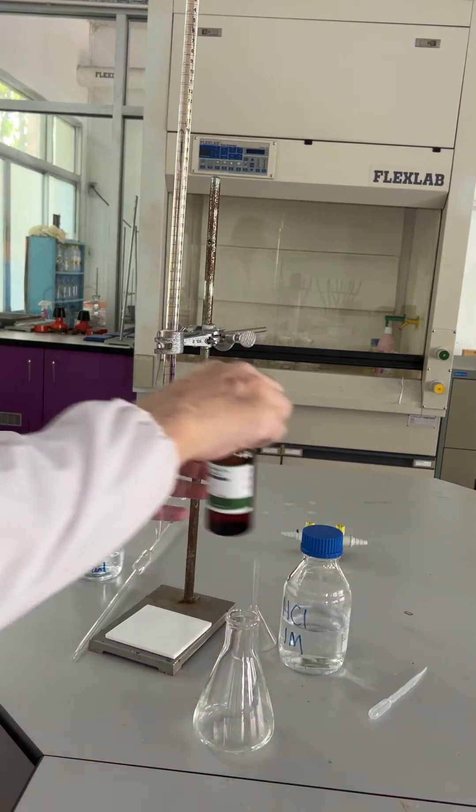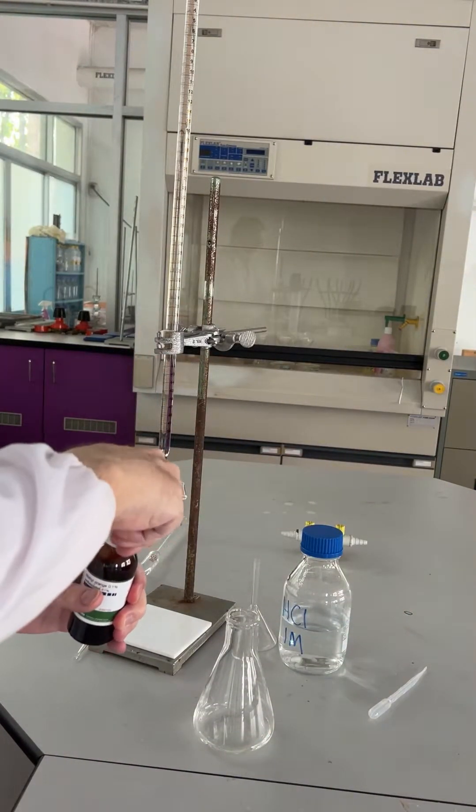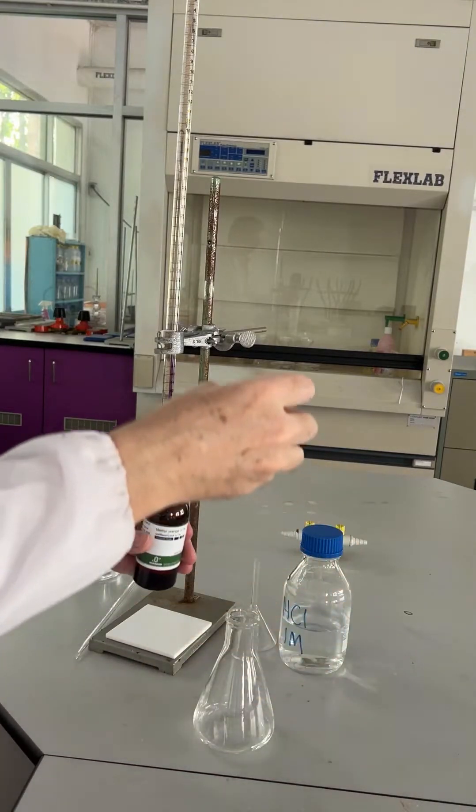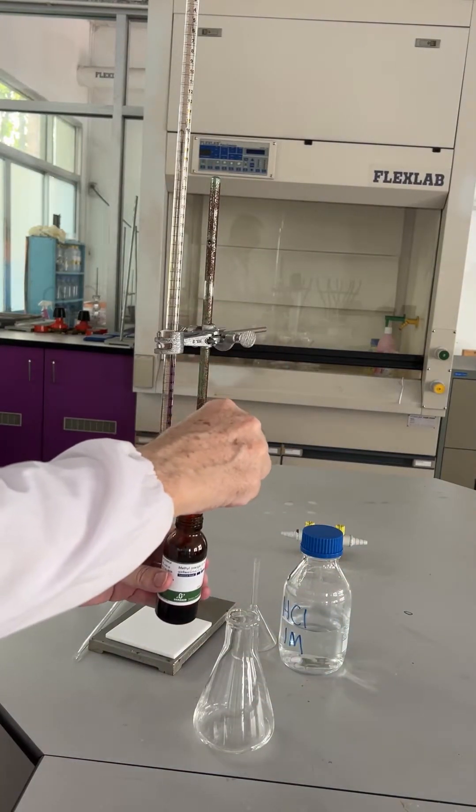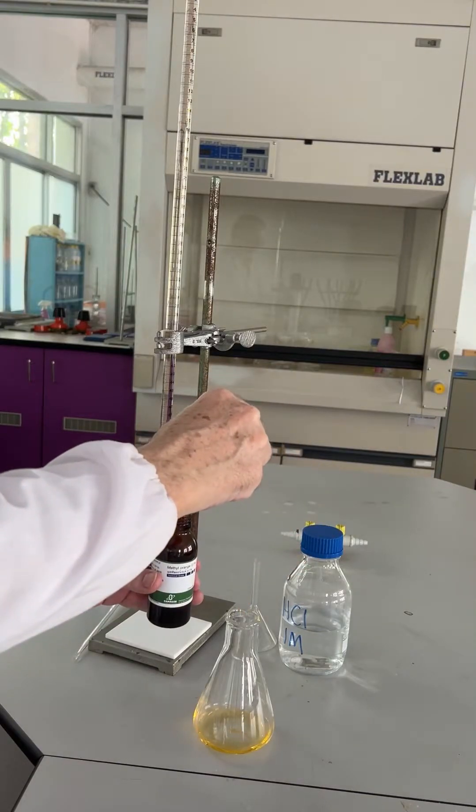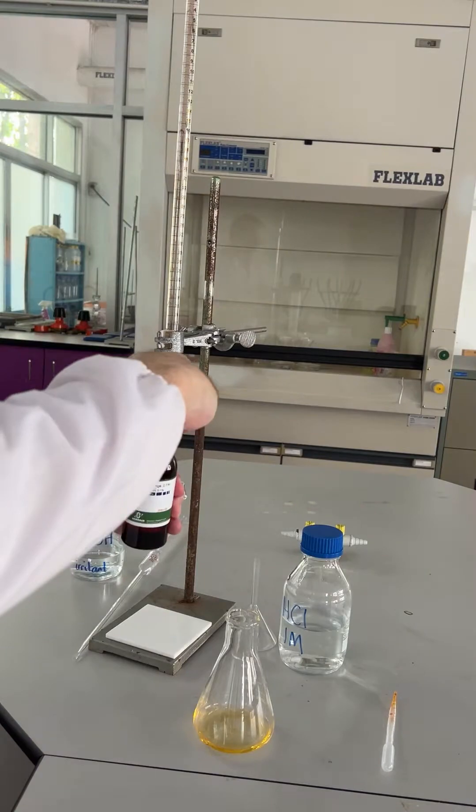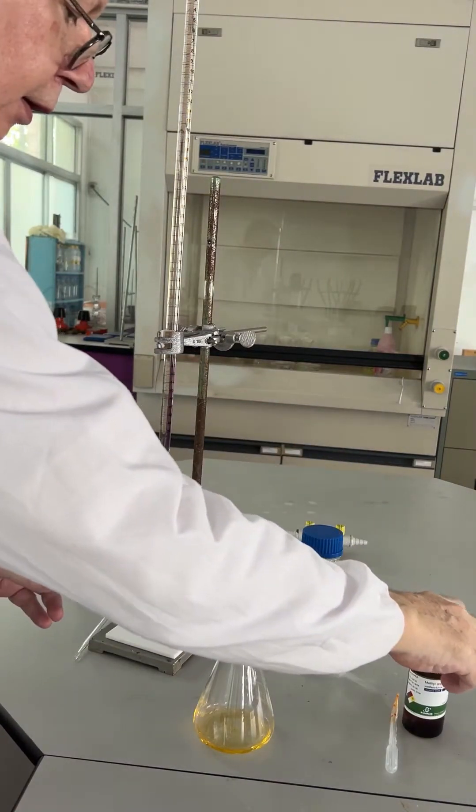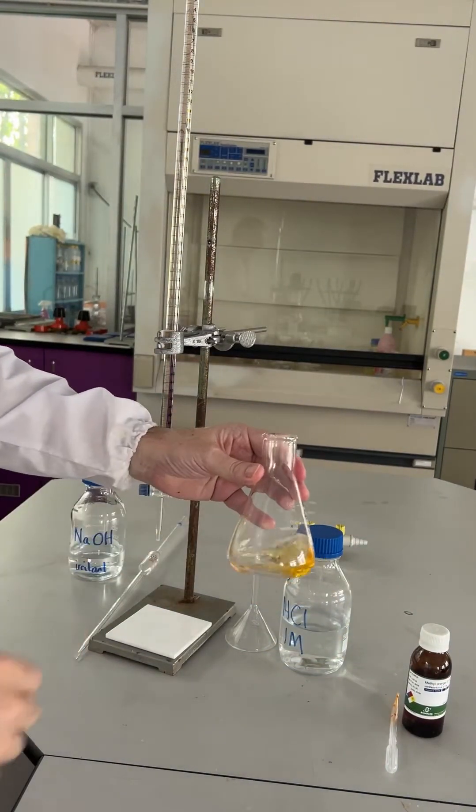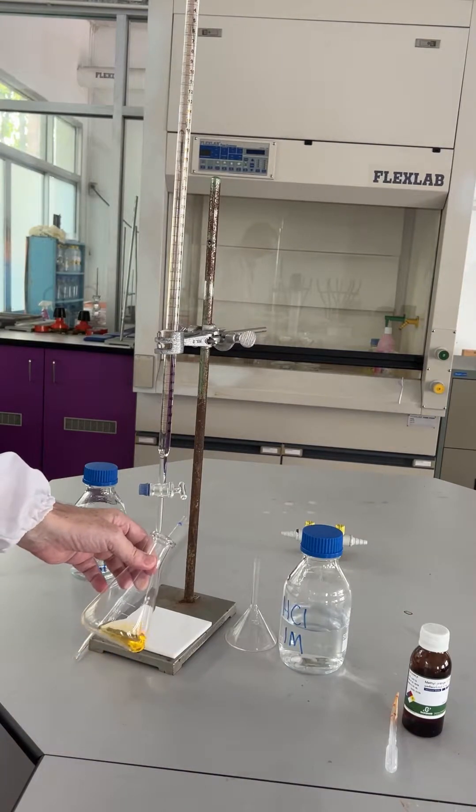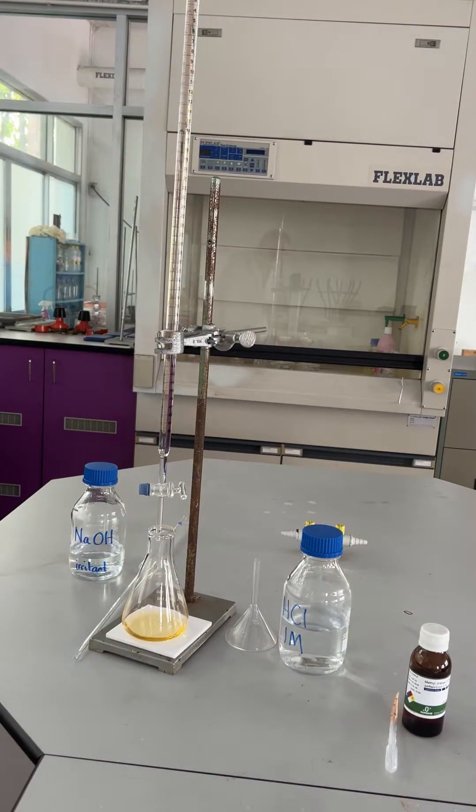Into which we will add three drops of methyl orange indicator. You should be able to see that the indicator is a pale yellow color. The indicator is a pale yellow color in alkali.